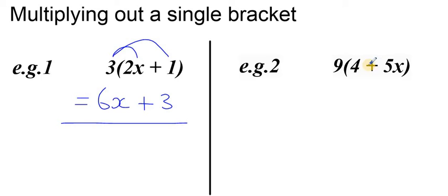On to example 2. The only difference in this bracket is we've got the 5x on the right hand side. This doesn't make any difference for the method.